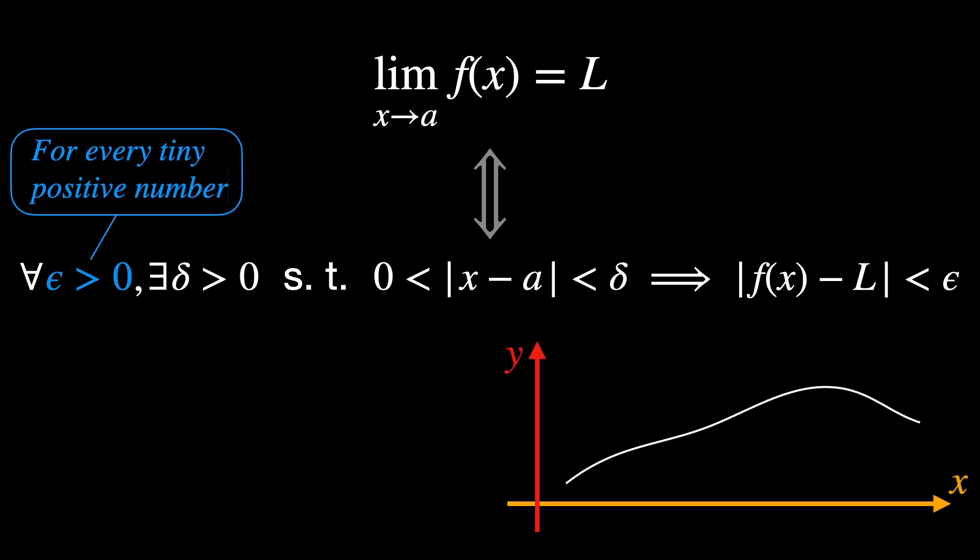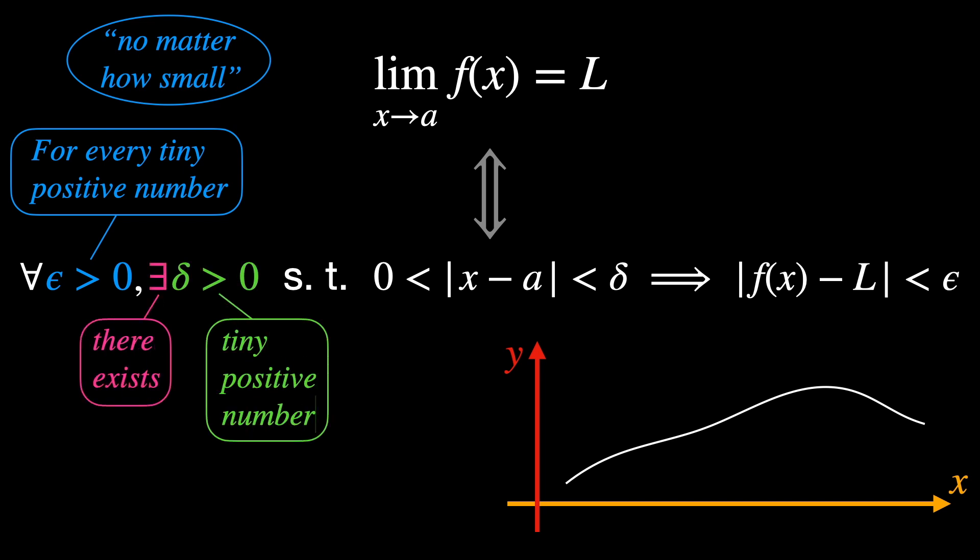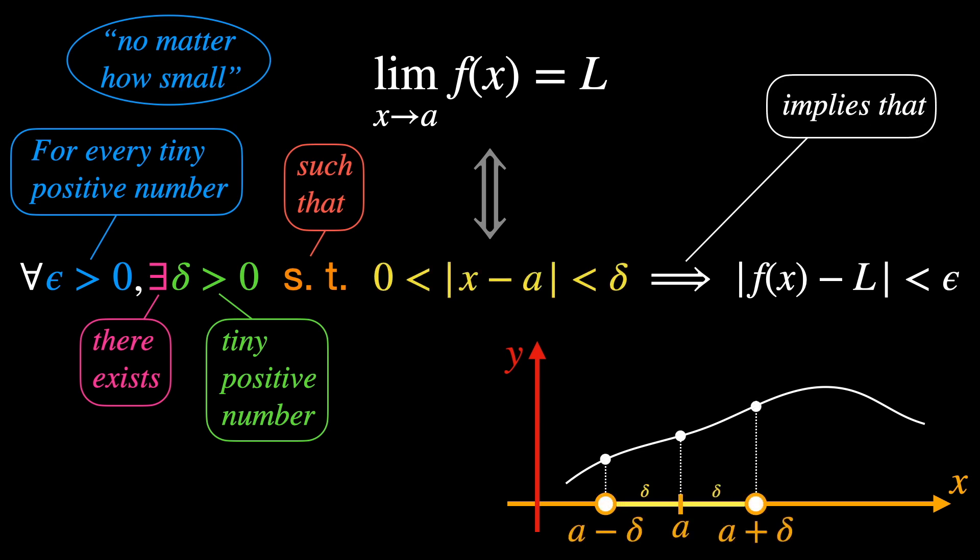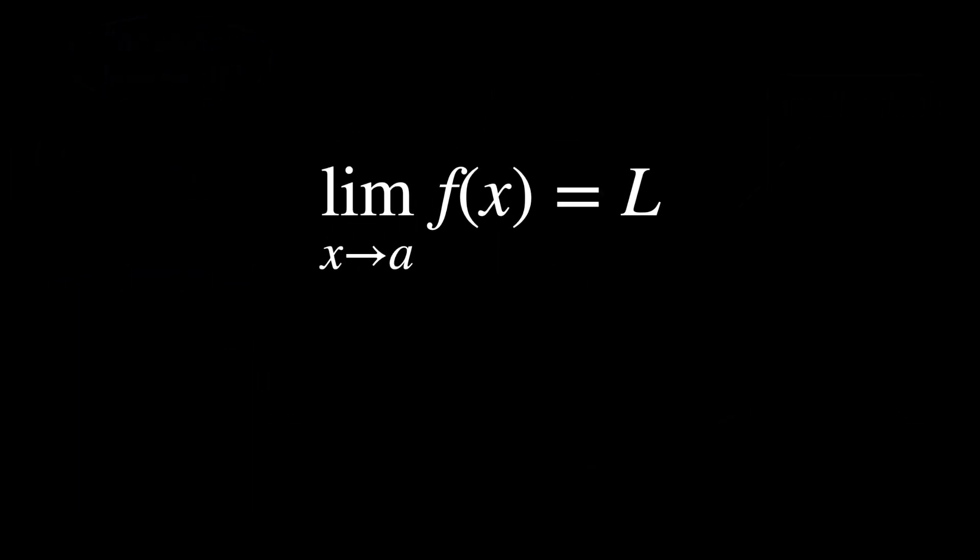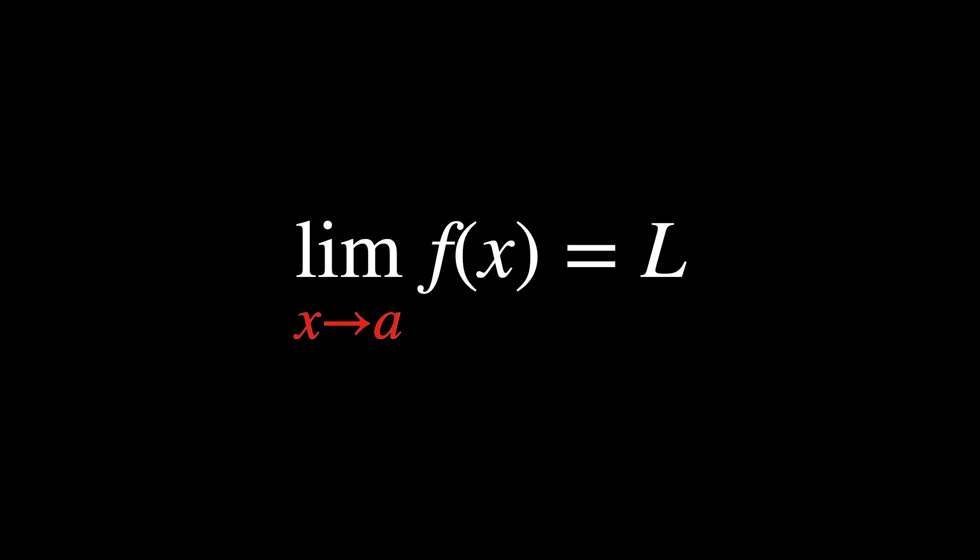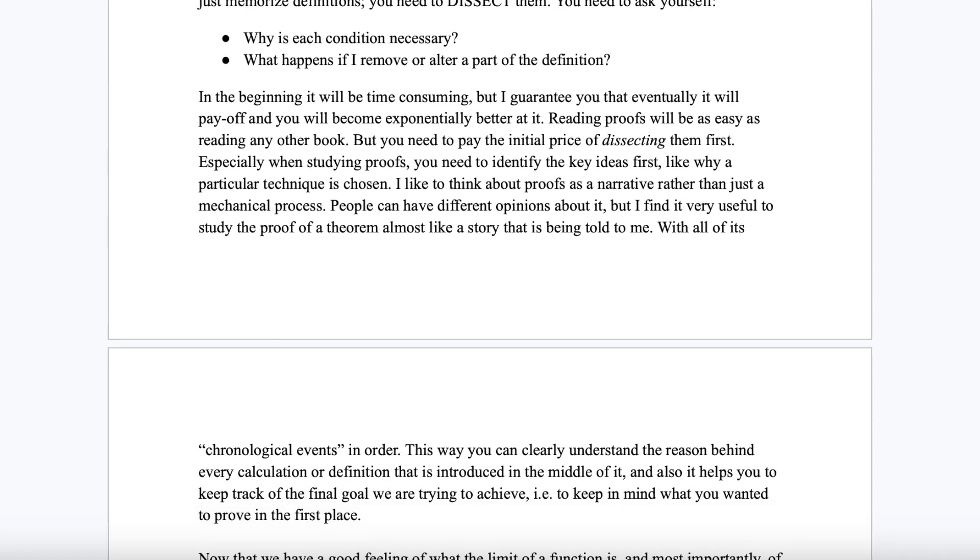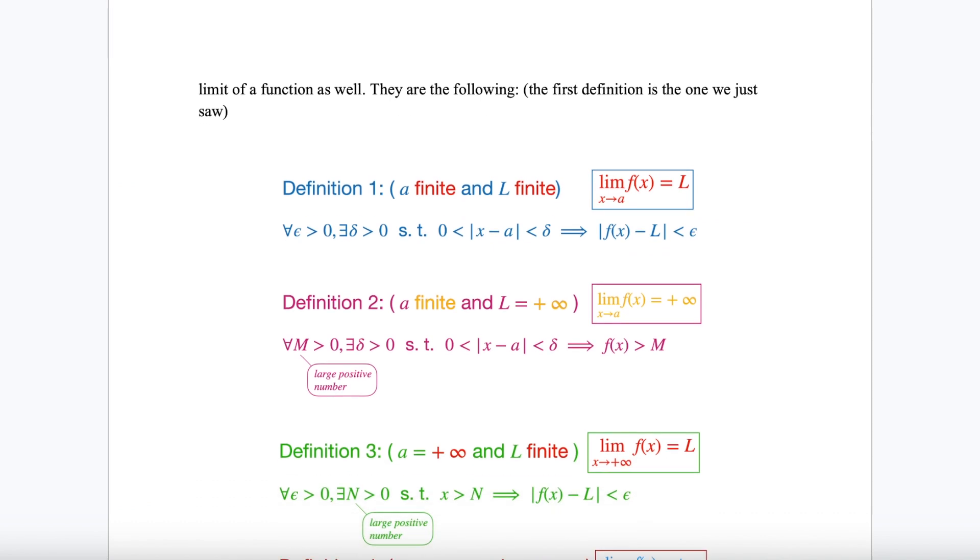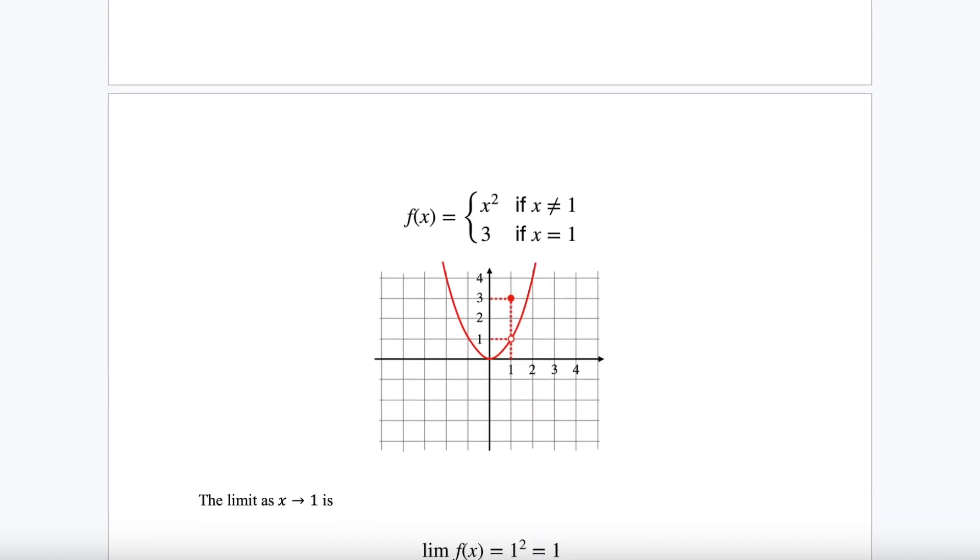This is written in mathematical language, of course, but I'll read it while translating into English. For every tiny positive number epsilon, no matter how small, there exists another tiny positive number delta, such that whenever x is within the distance delta from a but not equal to a, the value of f of x is within the distance epsilon from l. Take your time to digest it. This is actually the particular case in which x tends to a finite number a, and the result of the limit is finite as well, the value l here. The other three cases for the definition of the limit of a function will be added to the PDF link that you guys can find, as usual, in the description below.